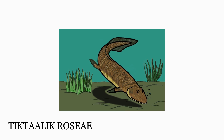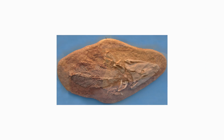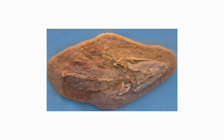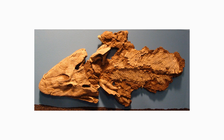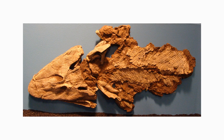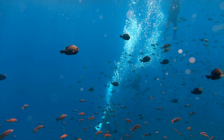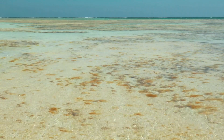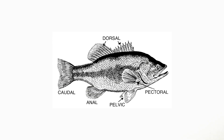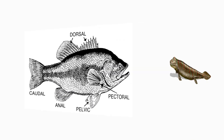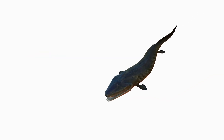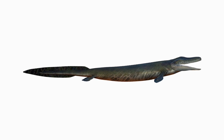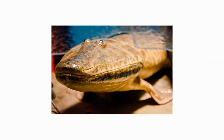Tiktaalik rosi is the oldest known tetrapod. This fossil species, which dates from the mid-Devonian, is thought to be the connection between lobe-finned fishes and early amphibians. Tiktaalik was likely an aquatic creature who walked on the bottom of shallow water estuaries. It possessed a fish-like pelvis, but its back limbs were bigger and stronger than its front limbs, indicating that it could move about outside of water. It possessed a crocodile-like head, a moving neck, and breathing nostrils.